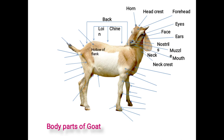Then the hull of the flank: the triangular depression just below the loin on both sides is called the hull of the flank. Here the respiration rate of the animal can be checked. Then the hip bone: the raised bone of the hull of the flank is termed the hip bone, and they are two in number situated on both sides. The distance between the two bones indicates the development of the reproductive organs.